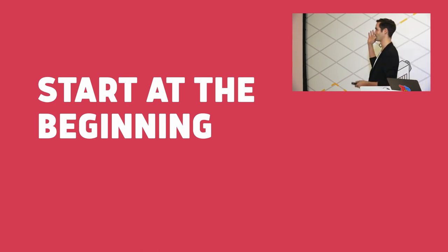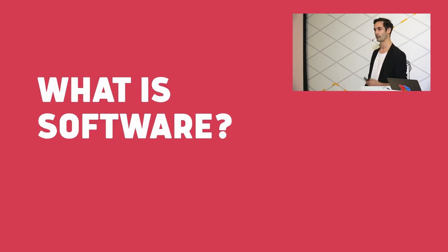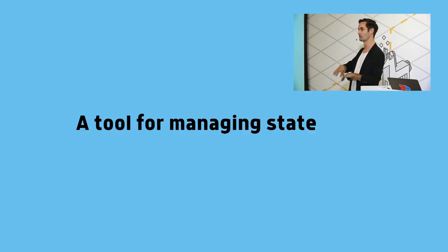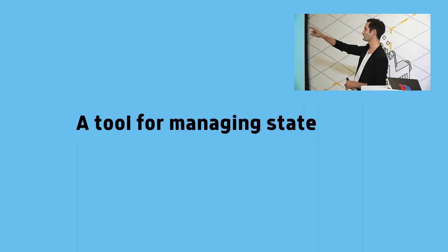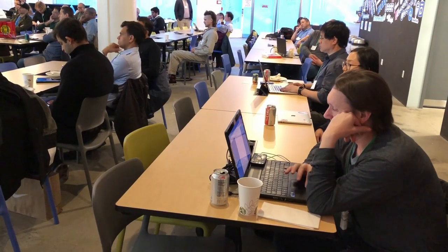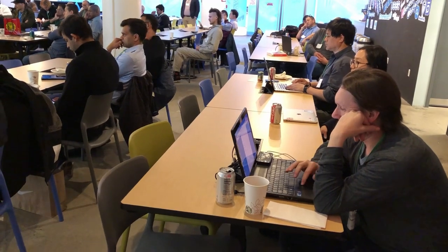I think the best place to start is at the beginning. What is software? For the purpose of this discussion, I'm going to say that software is a tool for managing state. Looking at this wall of stickers, you can go through every one of these startups — SoundCloud is a tool for managing the state of MP3s, BuzzFeed is a tool for managing which Harry Potter house you're in. All of these have some sort of state management system going on.